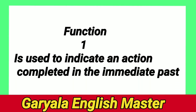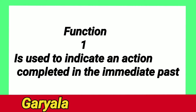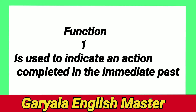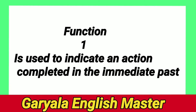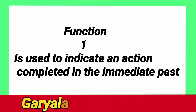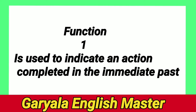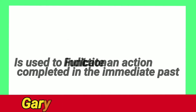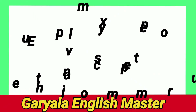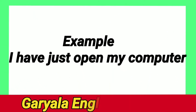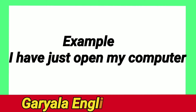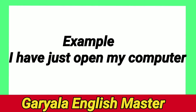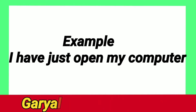It is the first function, which is very important. Present Perfect is used to indicate an action completed in the immediate past. For example: 'I have just received your letter.' Something happened in the past, but in the immediate past — 'I have just received your letter.' The word 'just' signals an immediate past action.